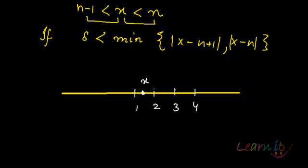The property of real numbers says that between 1 and 2, there will be at least one real number. So this becomes my n minus 1, this becomes my n.